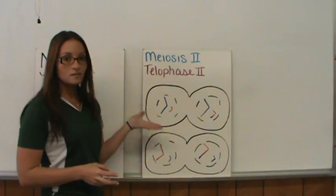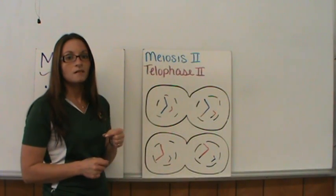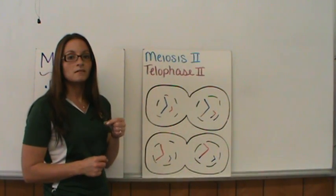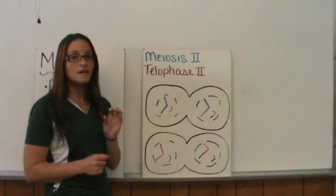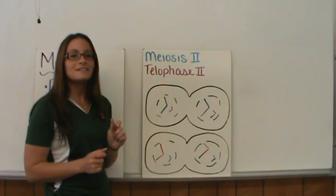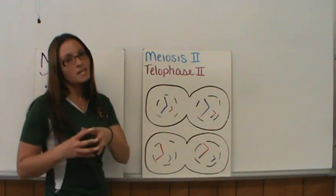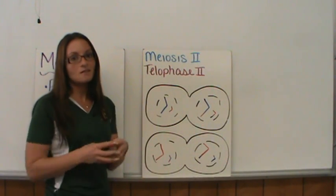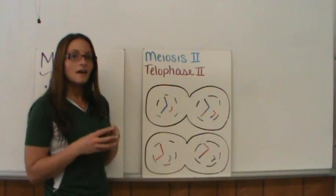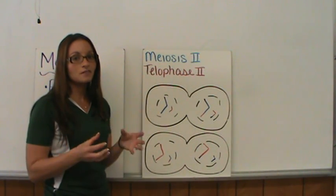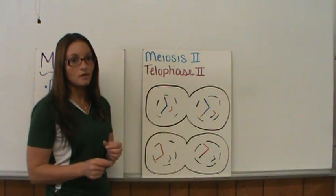So this is meiosis. The purpose of meiosis is to split the chromosome numbers in half, to produce haploid cells from diploid cells, and to do it effectively for sexual reproduction.